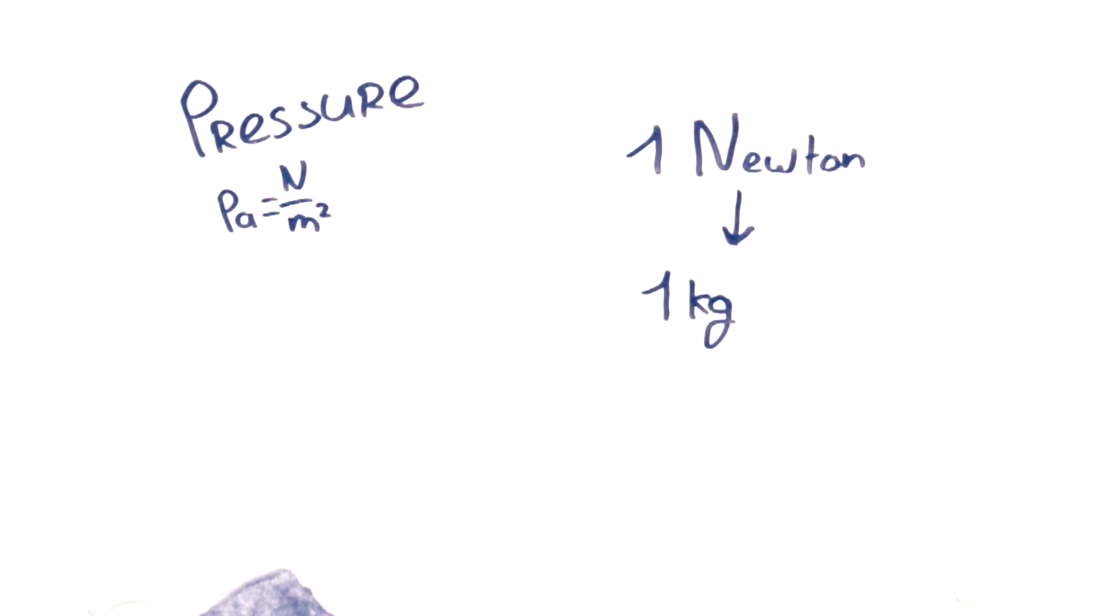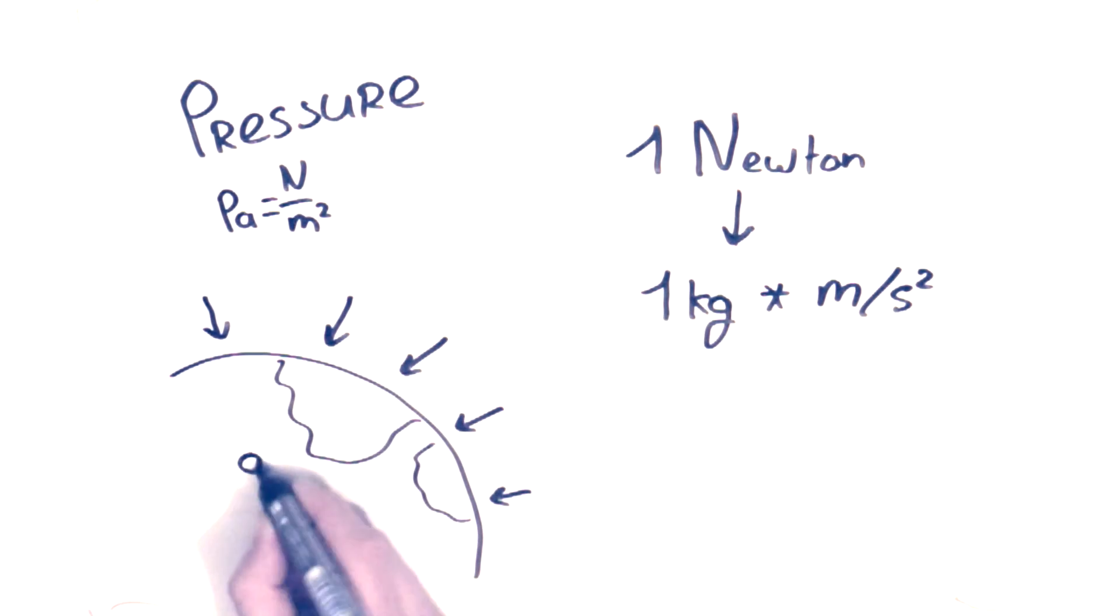1 newton is equal to 1 kilo times the acceleration in meters per square second. The acceleration on earth, due to the pull of gravity, is roughly 9.8 meter per square second.